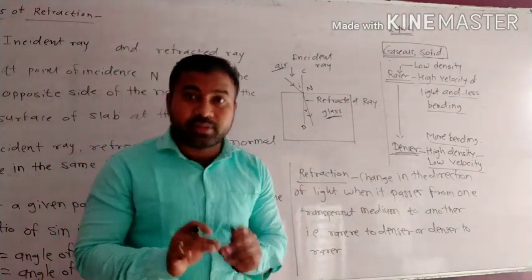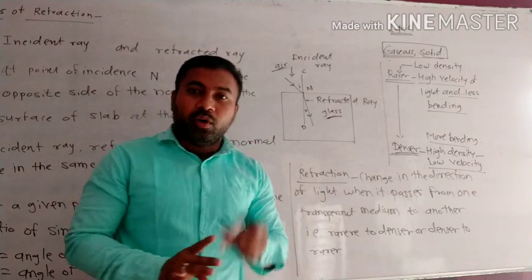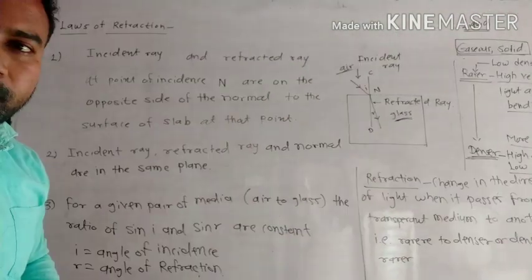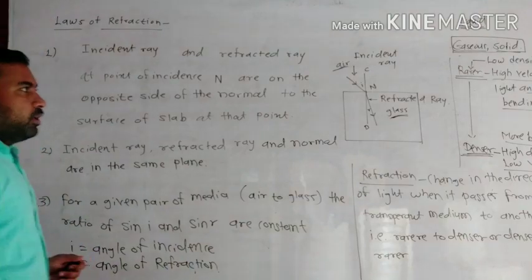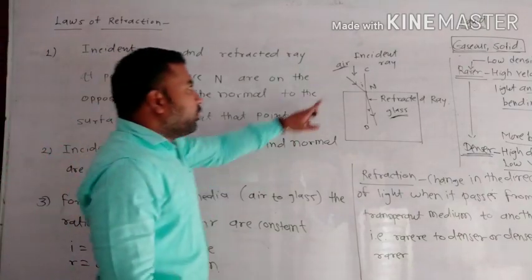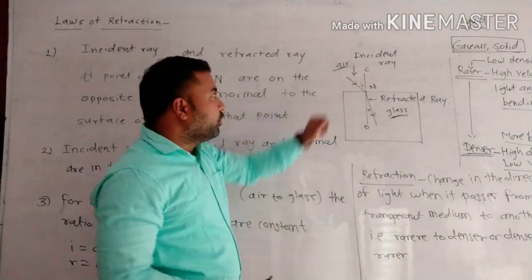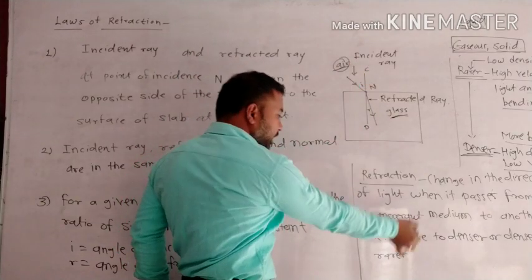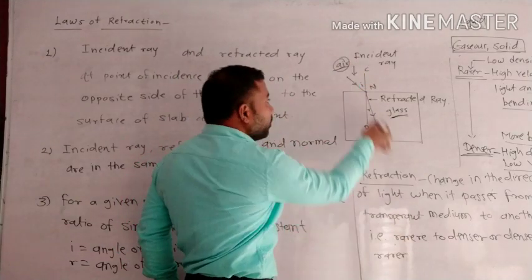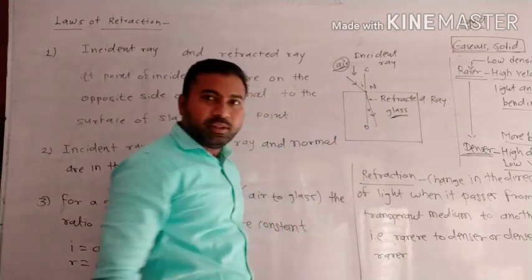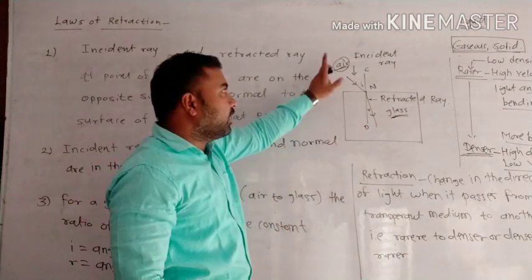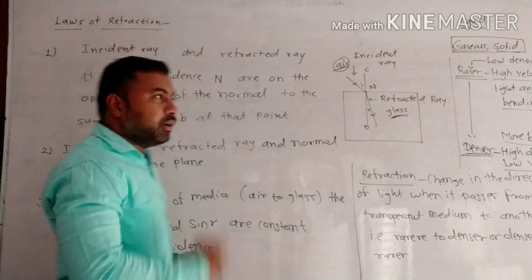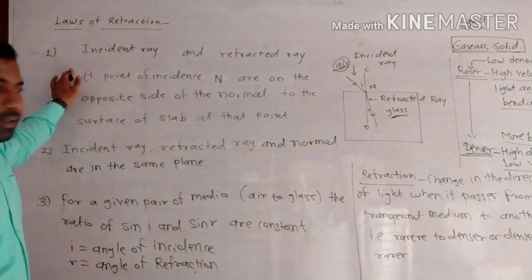Now the laws of refraction will be covered. According to the refraction event, where light rays pass from one transparent medium — that is air, a rarer medium — to a denser medium, that is glass, when the light rays hit the surface, the laws of refraction apply to determine their direction.